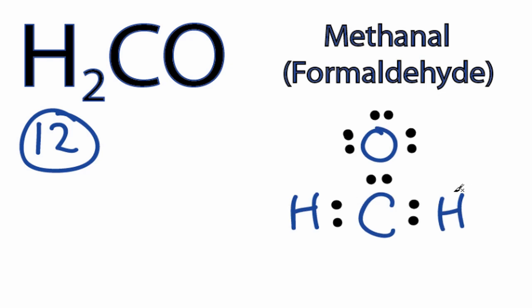At this point, everything has a full outer shell except carbon, which only has 6 valence electrons. We can take these two valence electrons from oxygen and share them to form a double bond.